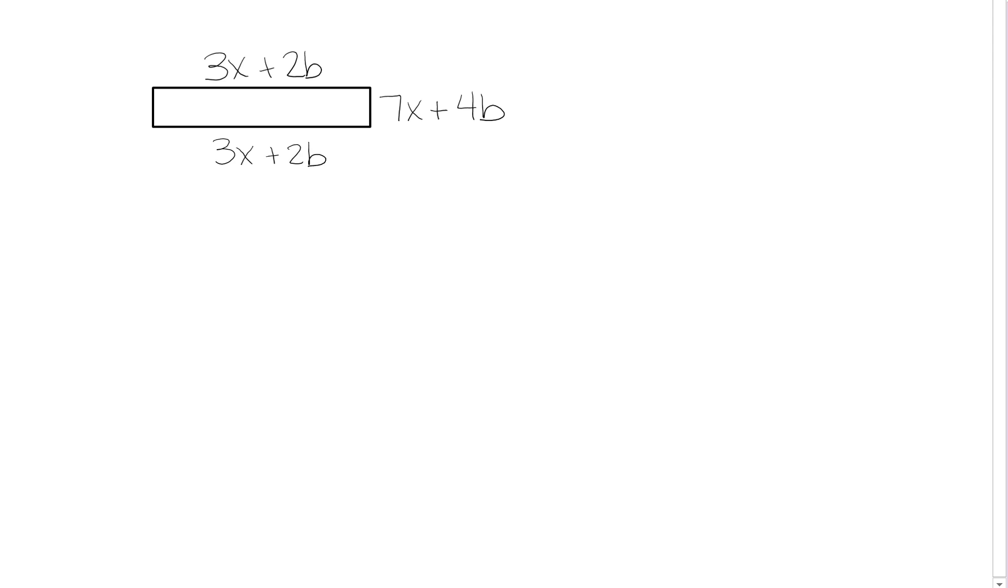And then I notice that the short distance here is 7x plus 4b, so that means the other one on the opposite side is also 7x plus 4b.